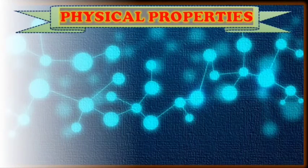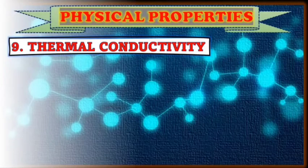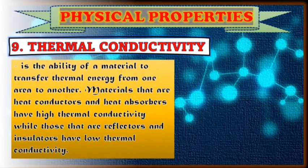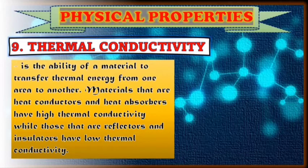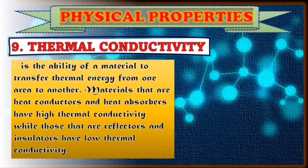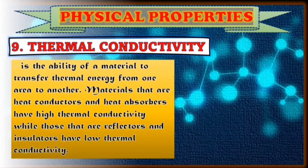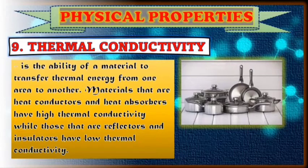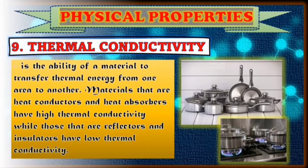Next is what you call thermal conductivity. Metals are good conductors — they can quickly absorb heat. That is why they are called thermal conductors. The pans we use in our kitchen are an example of thermal conductivity.